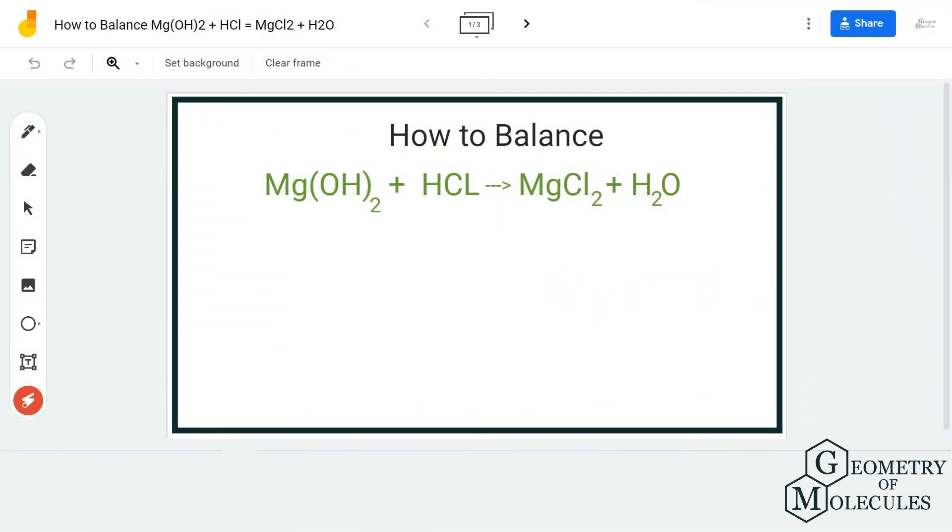Hi guys, welcome back to our channel. In today's video we're going to help you balance this equation where we have Mg(OH)₂ and HCl on the reactant side, MgCl₂ and water on the product side. This is basically a reaction of acid and base that neutralize each other and form salt plus water. MgCl₂ is a salt and H₂O is water.